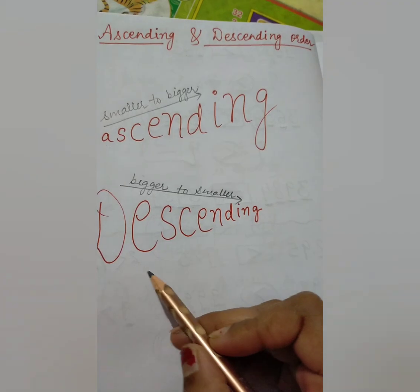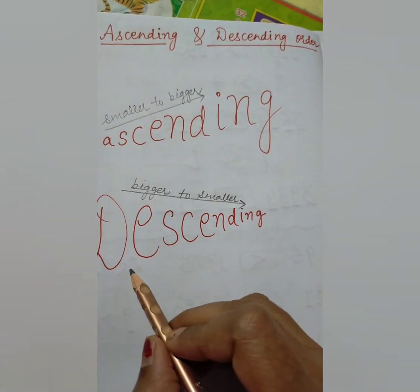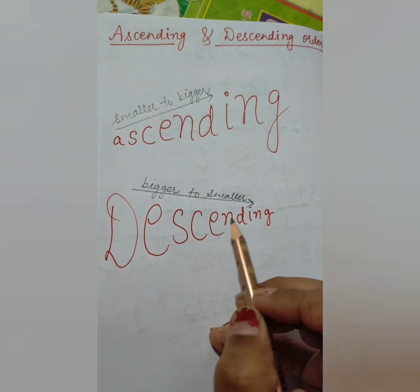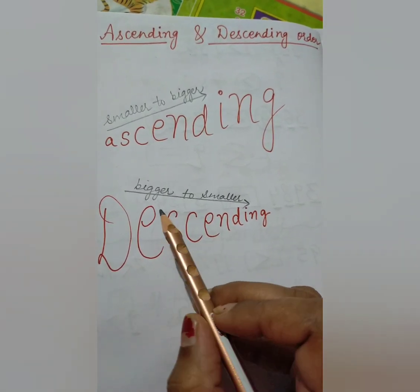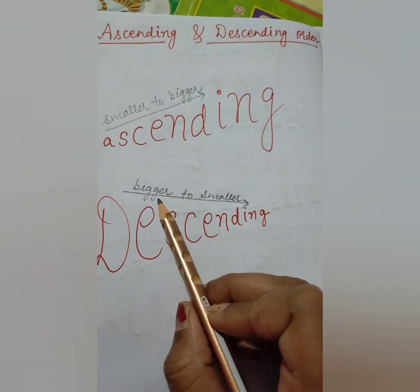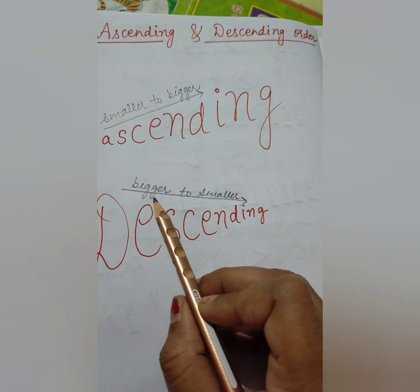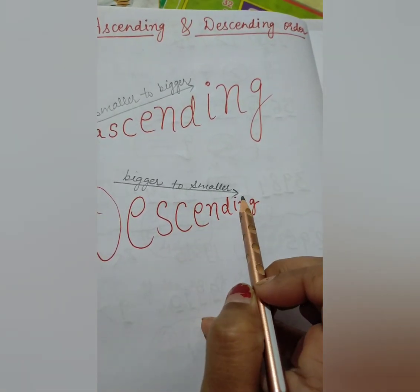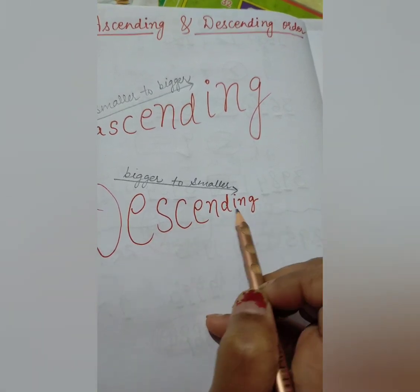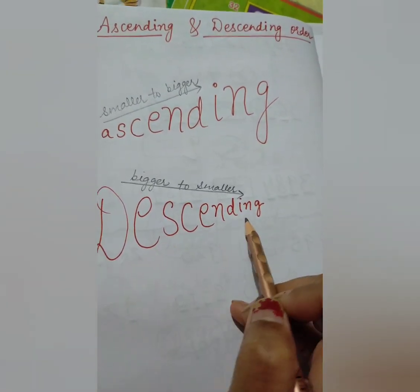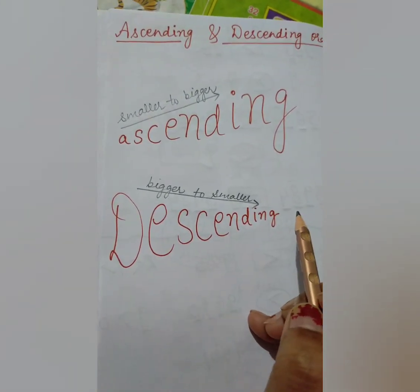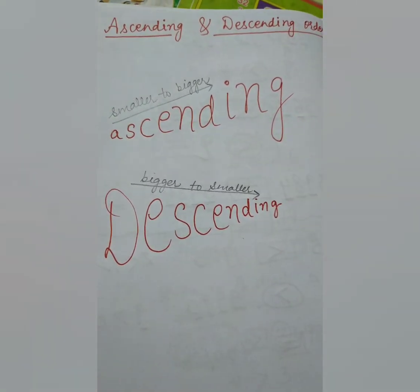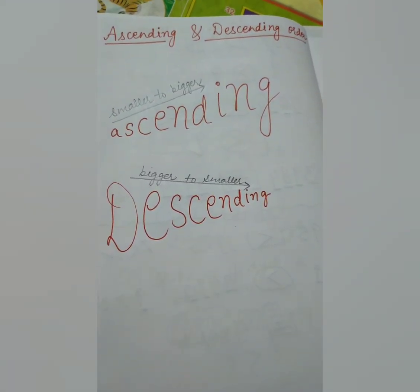In the same way, there is one more form for ordering numbers — that is descending order. In descending order, the bigger number is written first and after that the smaller numbers are written. That arrangement is called descending order.